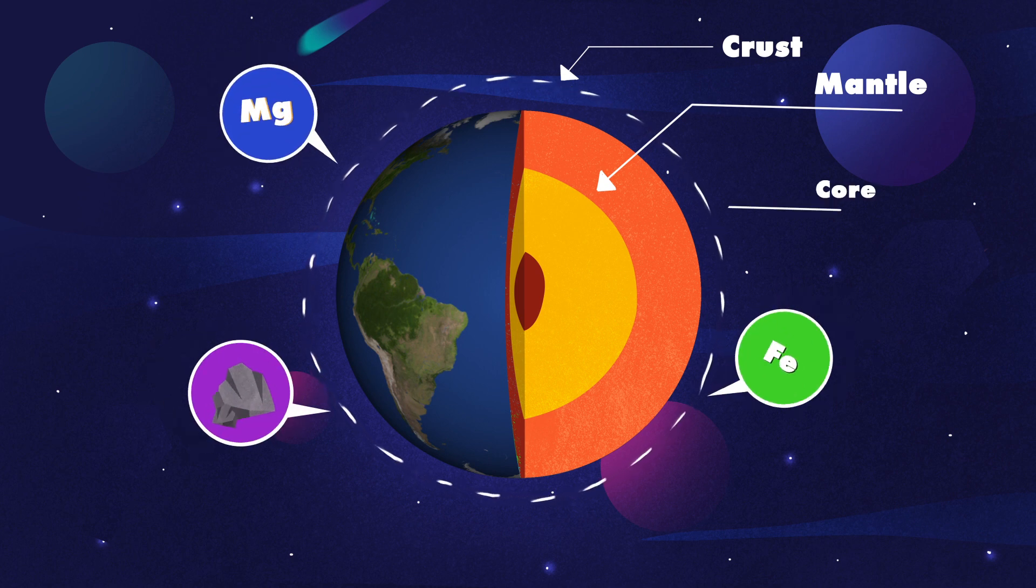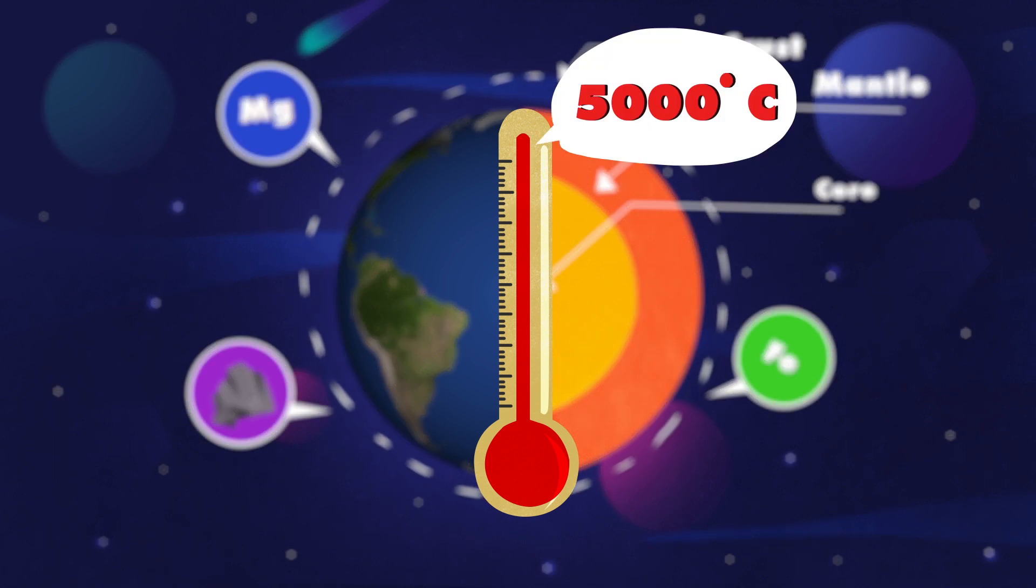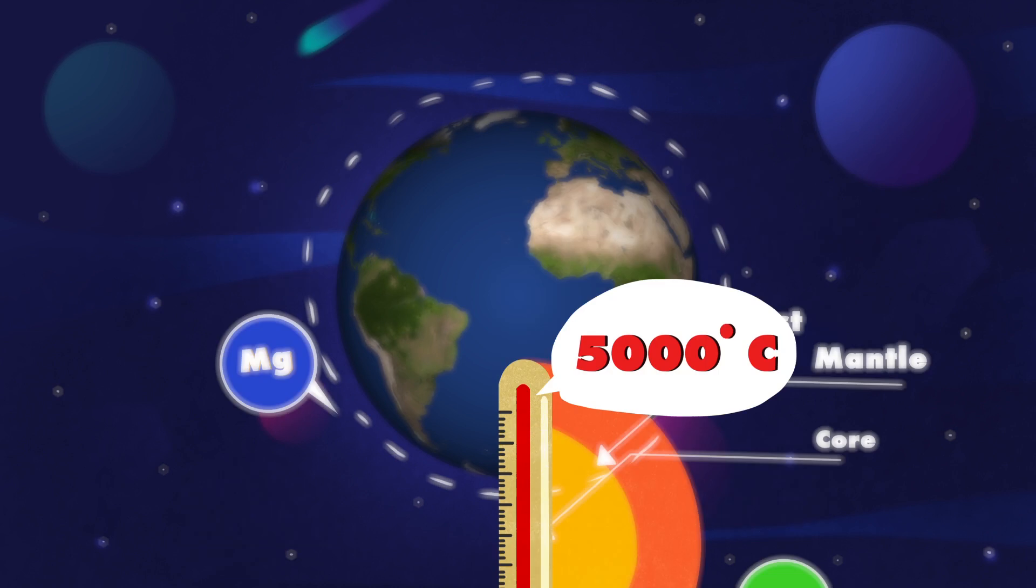After that, there's the outer core. At around 5000 degrees Celsius, the Earth's outer core is so hot that its makeup of iron and nickel is pure liquid.